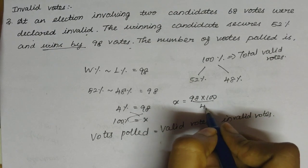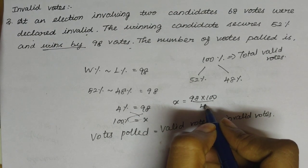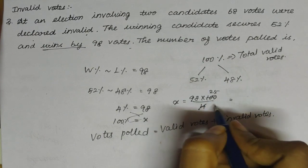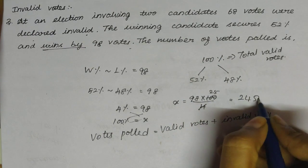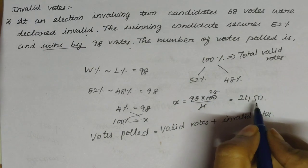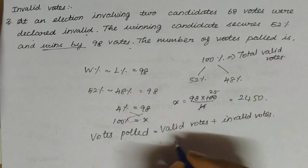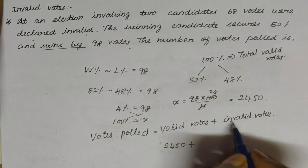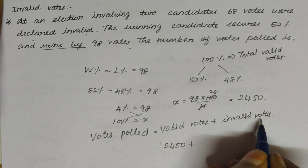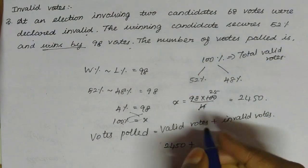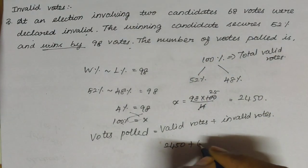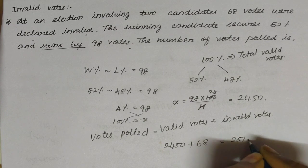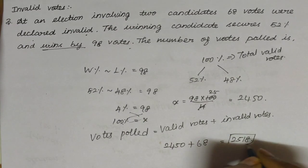4 table cancel: 24 is 4, 25 votes are 100. So multiply by 2: valid votes are 2450. Invalid votes are 68 votes. So total votes are 2518 votes.